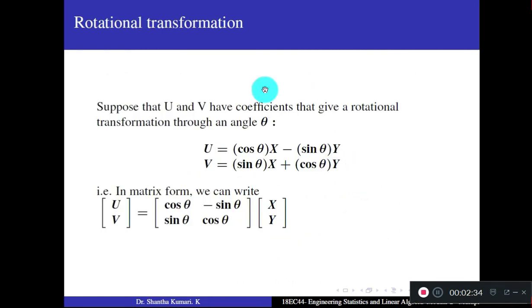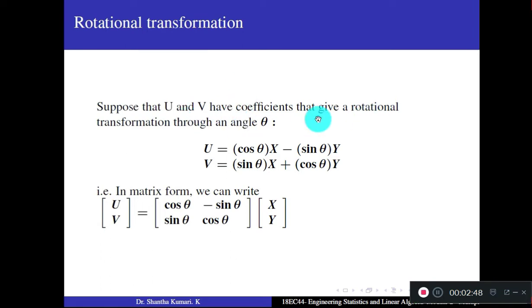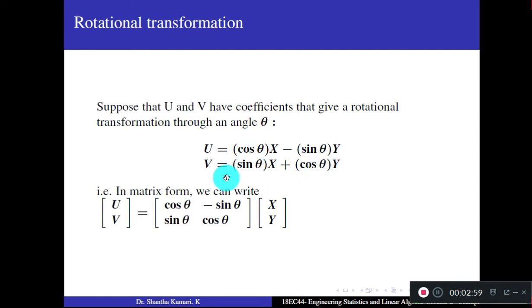Today we shall study about rotational transformation. If u and v have coefficients just like the previous transformation — u = ax + by, v = cx + dy — but the transformation is through an angle θ, then a = cos θ, b = −sin θ, c = sin θ, and d = cos θ.